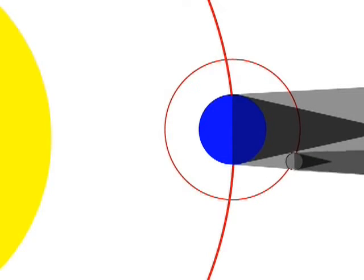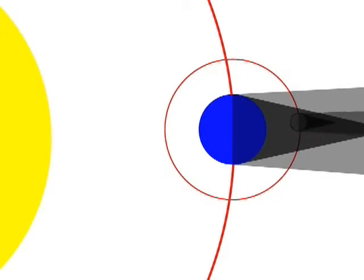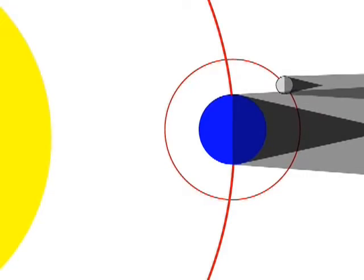Since the Earth's shadow is so large, it can blot out the entire moon for as much as half an hour. A lunar eclipse can be seen by anyone on Earth who has a clear view of the moon during the period of darkness.